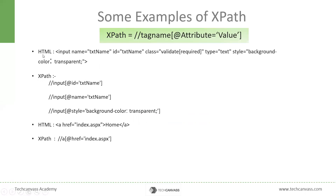For example, we have this kind of HTML tag. There are different ways to write the XPath. For example: forward slash, input — that is the tag name — then at-sign, ID is the attribute name and its value. The alternate way is forward slash input, at-sign, name equals text name, and so on. If an HTML tag has a hyperlink, its XPath would be forward slash, the tag name A, then inside the braces, at-sign href — that is the attribute name — and its value.